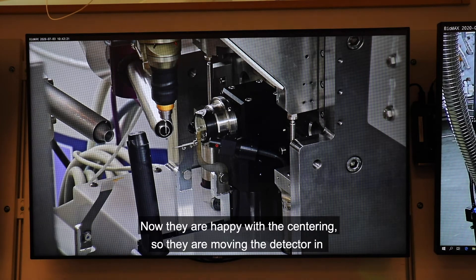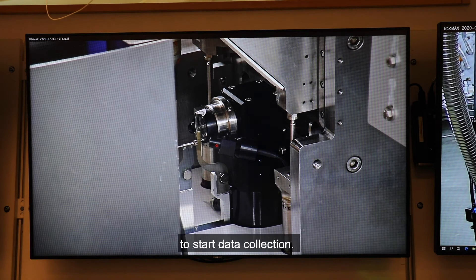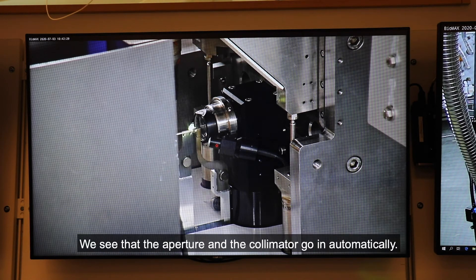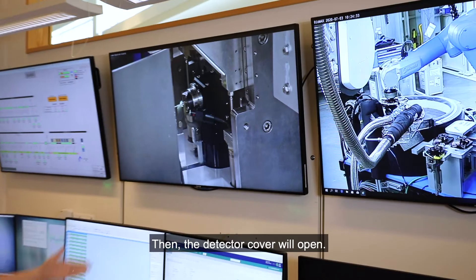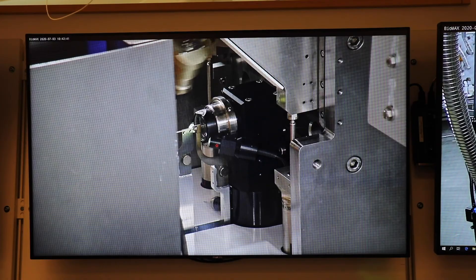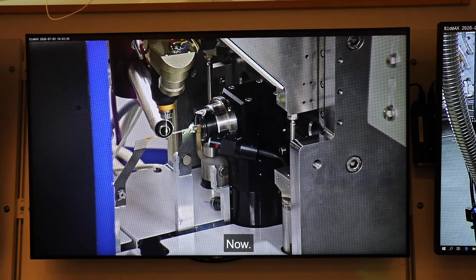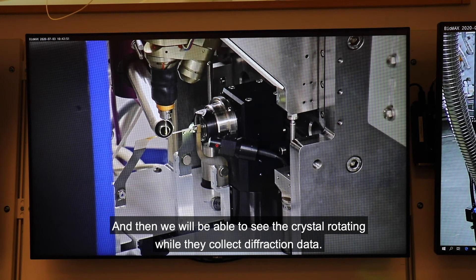Okay, so now they are happy with the centering. So they are moving the detector in to start data collection. We see that the aperture and the collimator go in automatically. Then the detector cover will open. Now.